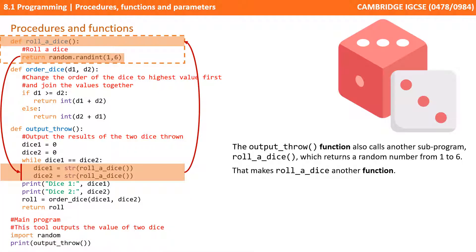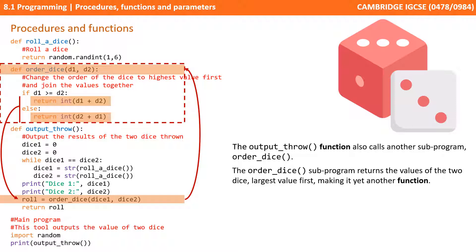The output_throw function itself also calls another subroutine roller_dice which returns a random number from one to six. This also makes roller_dice another function as it returns a value. Output_throw function also calls another subroutine order_dice and we can see here that order_dice returns the value of the two dice with the largest value first. Again as it's returning a value it's yet another example of a function.